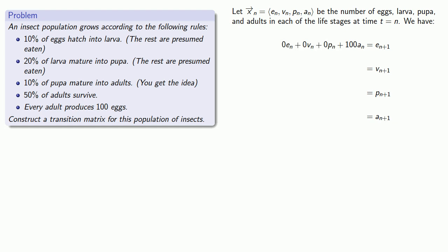Next, how about the number of larvae? If we take a look at our description of how the insect population grows, we see that the only place we get larvae from is that 10% of the eggs hatch into larvae. So the number of larvae that we get is going to be 10%, or 0.1, times the number of eggs. And again, we'll write this using all of our variables.